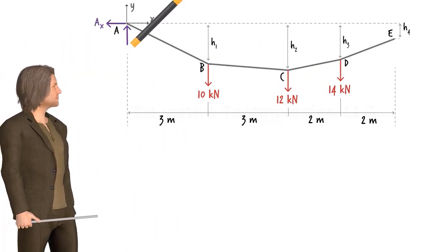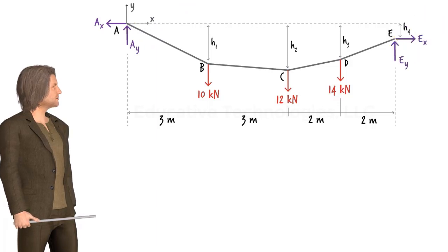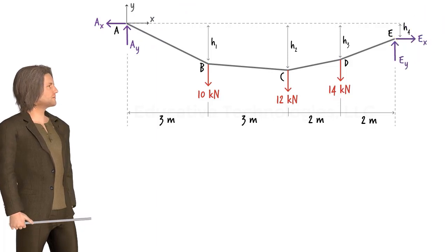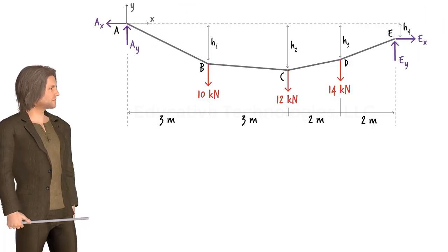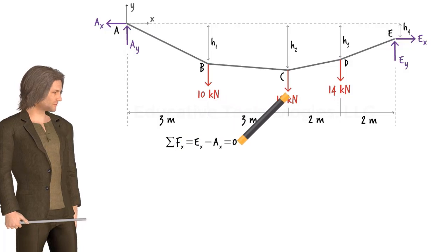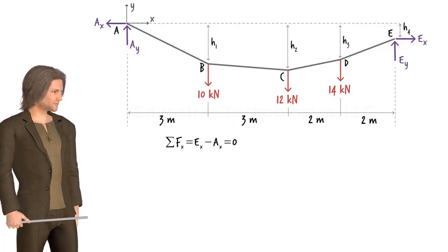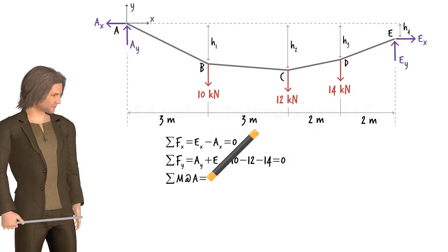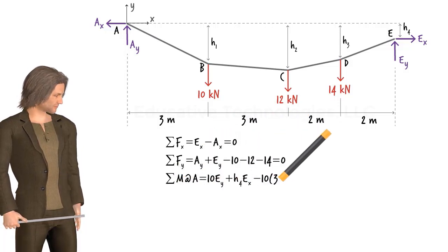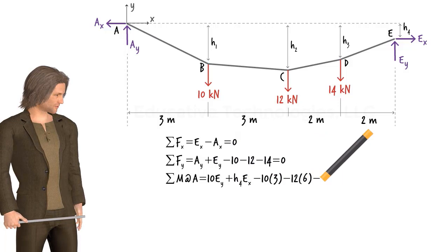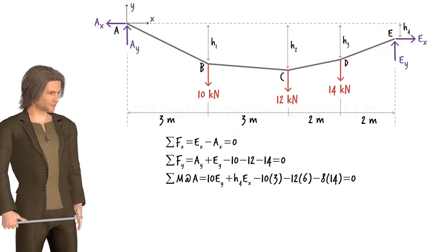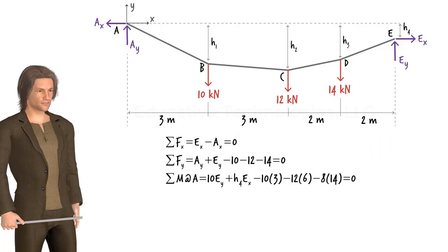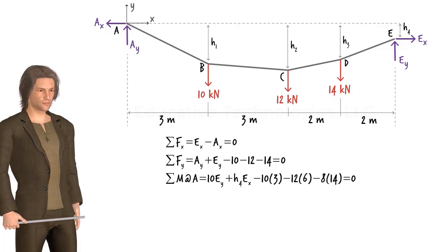Considering the free body diagram of the entire system, we can write three equilibrium equations: the sum of the forces in the x-direction must be zero, the sum of the forces in the y-direction must be zero, and the sum of the moments about point A must be zero. We can generate three additional equations using the sum of the moments about each interior joint.